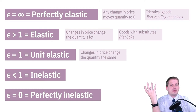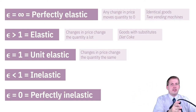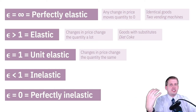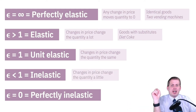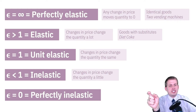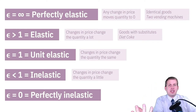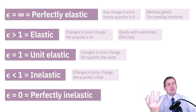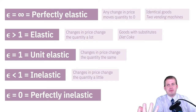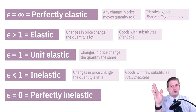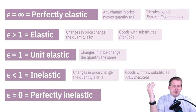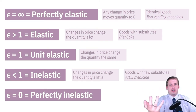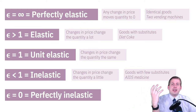Unit elasticity is a hypothetical thing — it just means if the price goes up by 10 percent the quantity goes down by exactly 10 percent. What we do care about is when elasticity is less than one, meaning changes in price change the quantity just a little bit. Prescription medicine, for instance — if it raises in price by 10 percent, you're still going to buy it, you'll just feel sad and angry about it. Any good with few substitutes is going to be inelastic. A classic textbook example is AIDS medicine — if they raise prices, people just have to live with it.